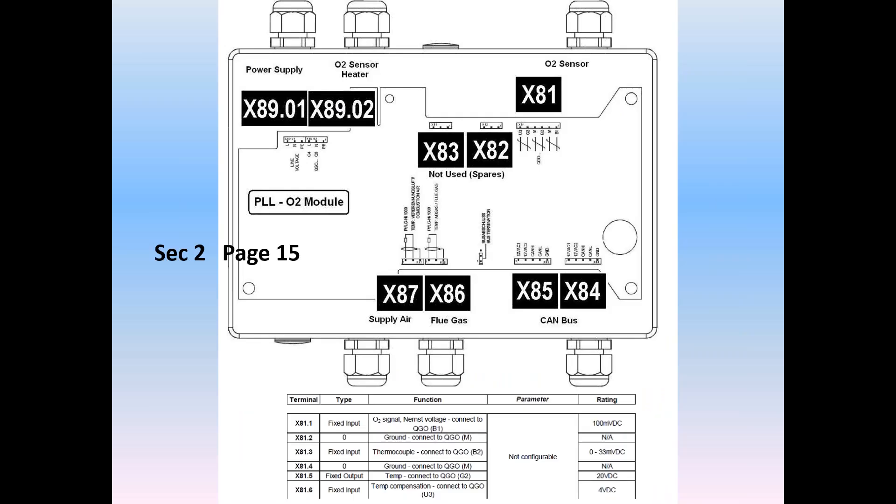This is one final example of some terminal listings and illustrates the PLL module used for the O2 trim system.